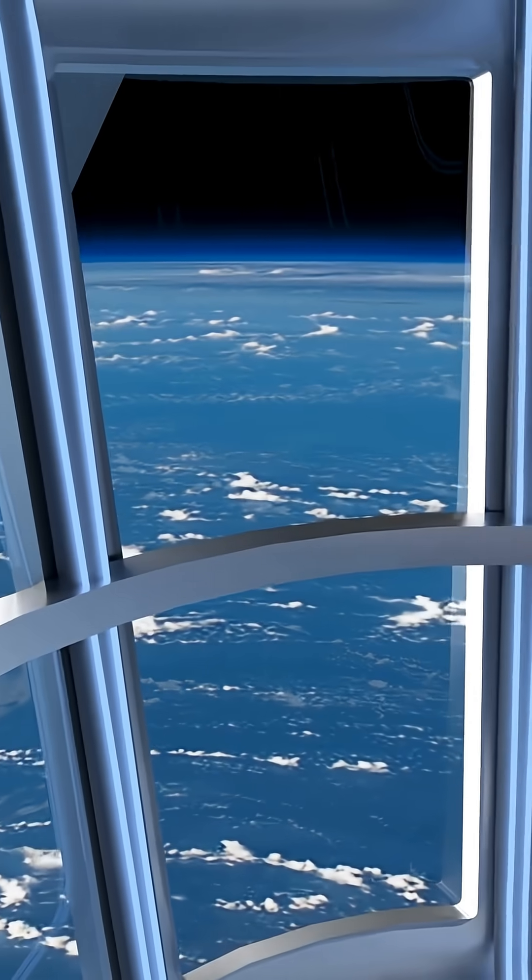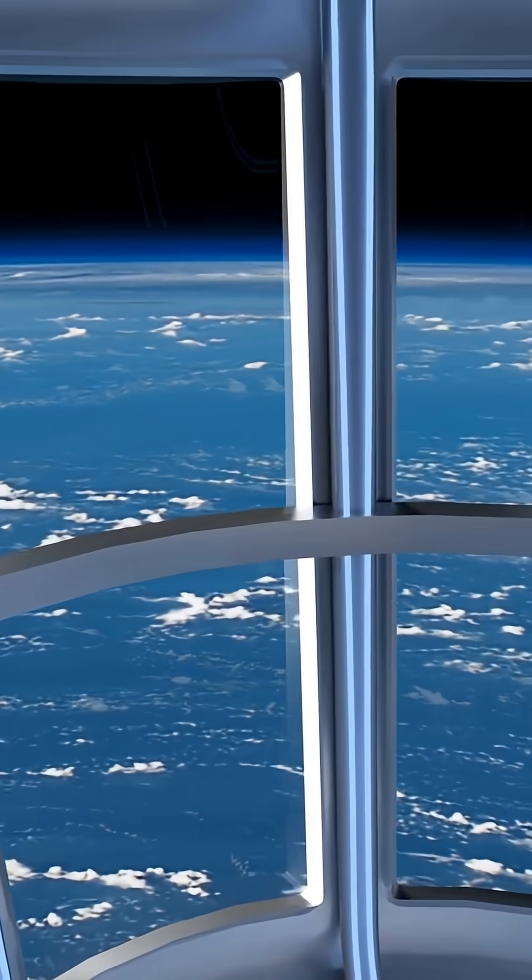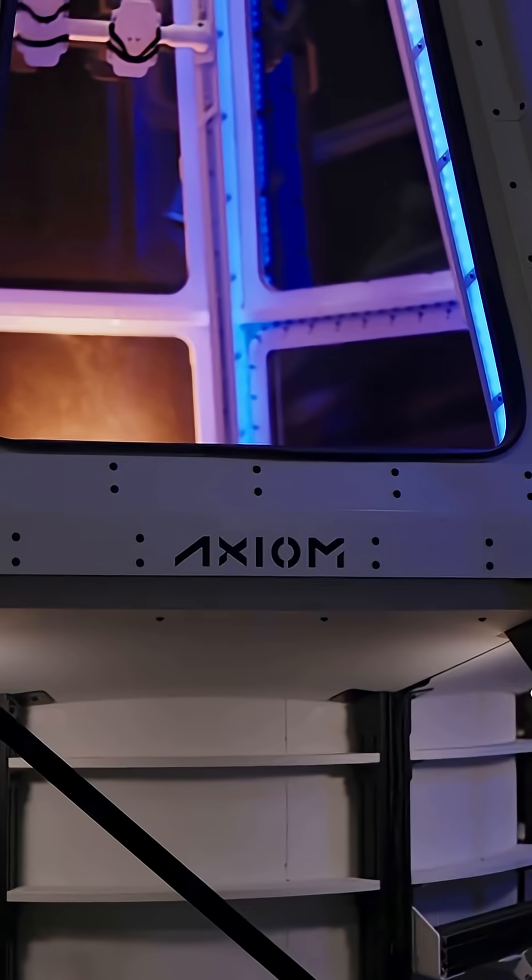Their revised plan now aims for a minimal two-module outpost in 2028 - small, but enough to keep American astronauts in orbit as the ISS sun sets.